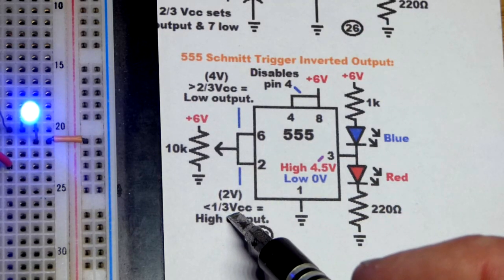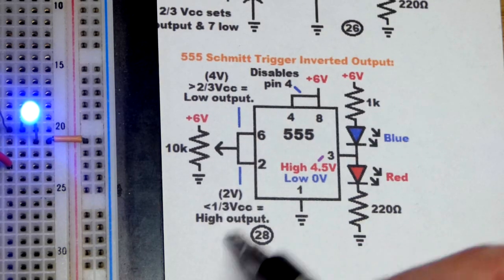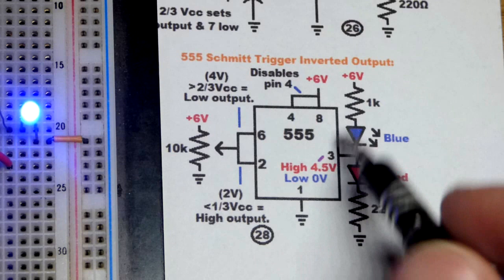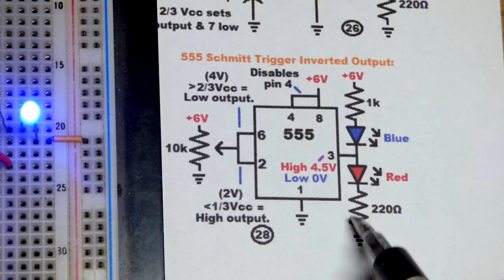If we lower the voltage down to one-third of the supply or less—2 volts or less when using 6 volts—that'll set the output high again. It has to go through a couple transistors, so you don't get the full supply voltage.